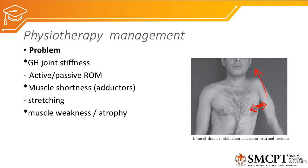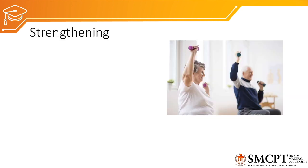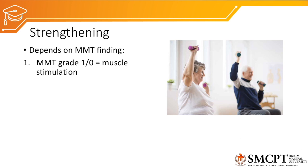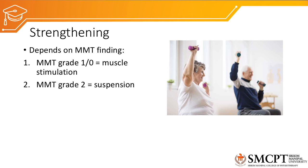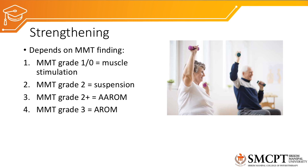Muscle weakness and atrophy of supraspinatus and infraspinatus will be seen, so strengthening exercises are performed. The protocol depends on MMT findings: grade 0 or 1 — muscle stimulation; grade 2 — suspension; grade 2 plus — active assisted range of motion; grade 3 — active range of motion; grade 3 plus and above — progressive resistance exercises.